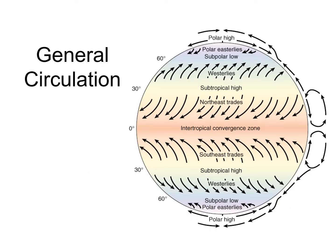We're going to culminate this chapter by looking at the general circulation pattern for the entire planet. We can identify key wind and pressure zones: the Intertropical Convergence Zone (ITCZ), a zone of low pressure at the equator; the subtropical high pressure zone at about 30 degrees north and 30 degrees south; the subpolar low at about 60 degrees north and 60 degrees south; and the polar high pressure zone at the north and south poles.